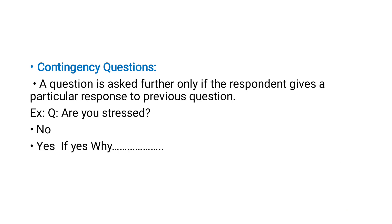Contingency questions are asked further only if the respondent gives a particular response to a previous question. For example, 'Are you stressed? Yes or no?' — if the answer is yes, the next question is 'Why are you stressed? What makes you stressed?' Similarly, 'Have you received information about HIV or AIDS? Yes or no?' — if yes, the follow-up is 'From where did you receive the information?'